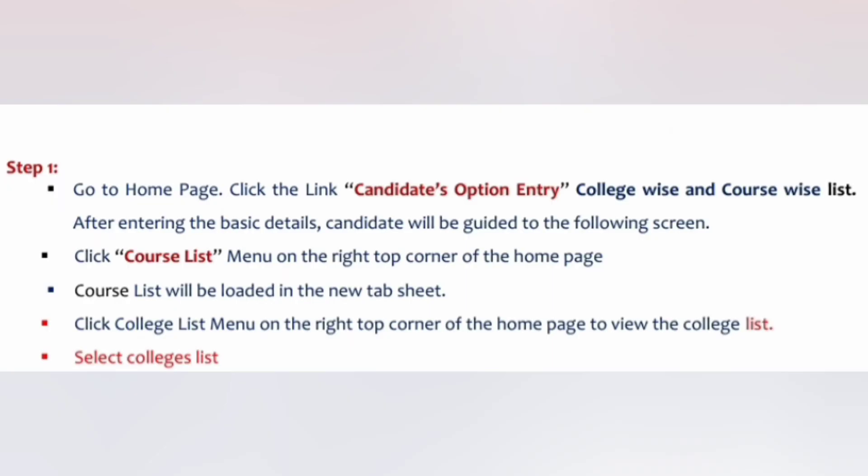Step one: go to the home page, where you will get the candidates option entry — which I have already shown. Within that candidates option entry, you will see college-wise and course-wise lists.